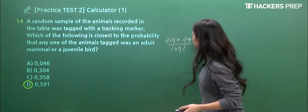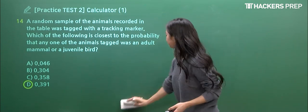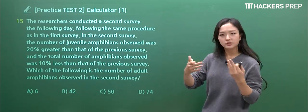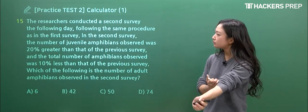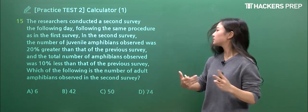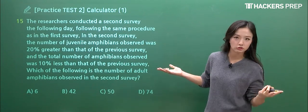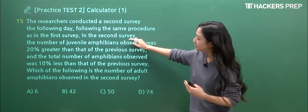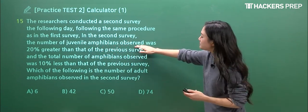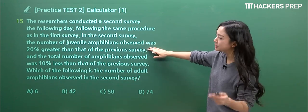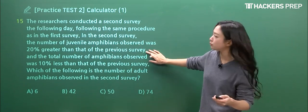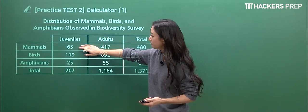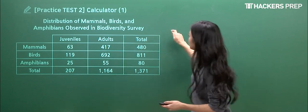Okay, that wasn't too difficult. Let's move on to question fifteen. So let's just read along and see what they're presenting. Researchers conducted a second survey the following day. So the next day, following the same procedure as the first survey, and in the second one, the number of juvenile amphibians observed was actually 20% greater than the previous survey. So let's go back to our table real quick and see how many of the juvenile amphibians there were.